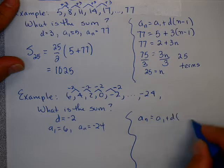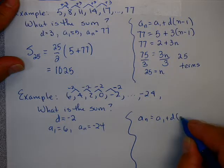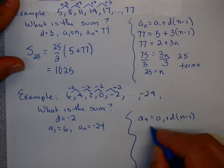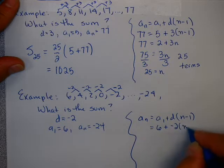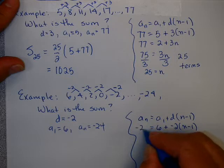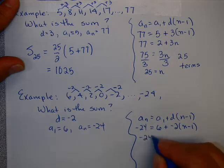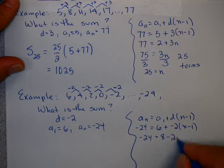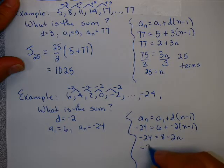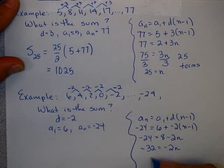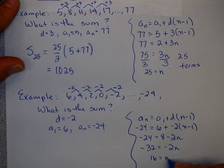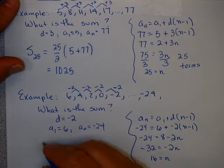Arithmetic explicit formula is a_n equals a_1 plus d times (n minus 1). First term is 6. Common difference is negative 2. And my last term is negative 24. So negative 24 equals 8 minus 2n. This is minus 32 equals minus 2n. So n is equal to 16. There are 16 terms in the sequence.